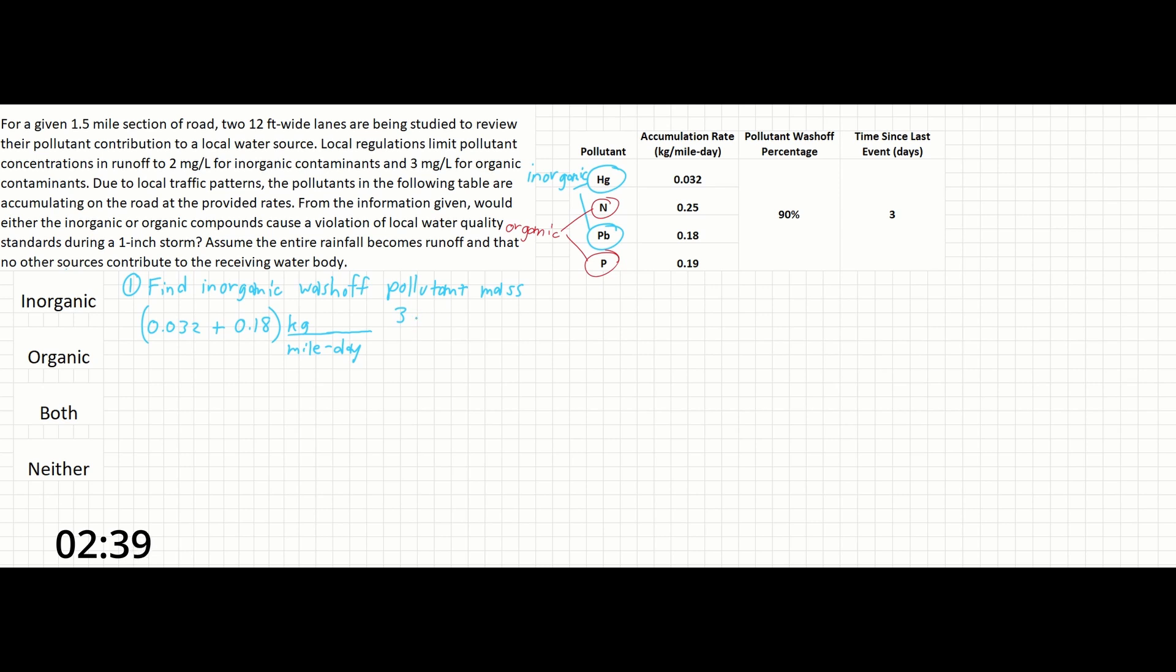And then multiplying again by the length of the roadway, which is 1.5 miles. And then finally we could go one step further right now and also figure out what the wash-off percentage is. So that's going to be 90 over 100. And this will calculate out to 0.859 kilograms.